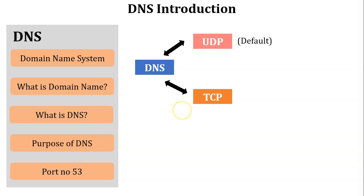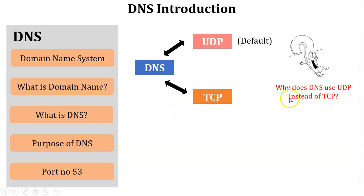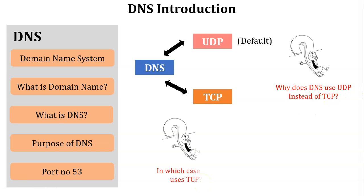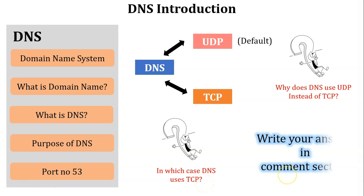Here are two questions: first, why does DNS use UDP instead of TCP? Second, in which case does DNS use TCP instead of UDP? Write your answers in the comment section.